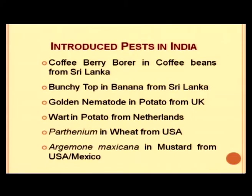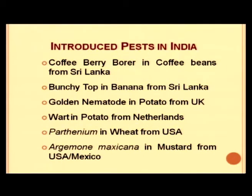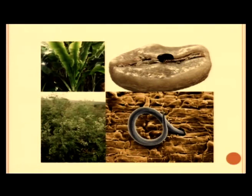Some examples of pests introduced into India from other countries include: coffee berry borer in coffee beans from Sri Lanka; bunchy top in banana from Sri Lanka; golden nematode in potato from UK; wart in potato from UK and Netherlands; parthenium (congress grass) which came with wheat from USA; and Argemone mexicana in mustard from USA and Mexico.